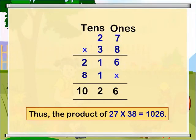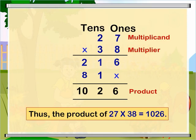Thus, the product of 27 and 38 is equal to 1026. Here, the multiplicand is 27, the multiplier is 38, and the product is 1026.